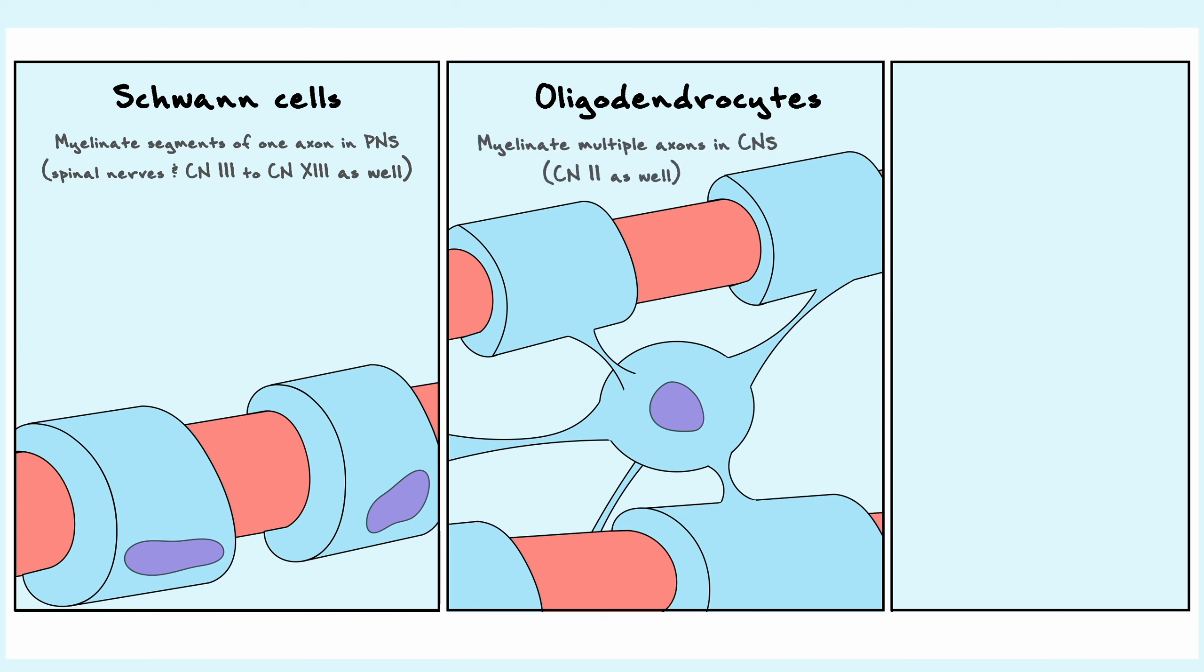Oligodendrocytes myelinate multiple axons, sometimes up to 30, in the central nervous system. Oligodendrocytes are also responsible for myelination of the second cranial nerve.